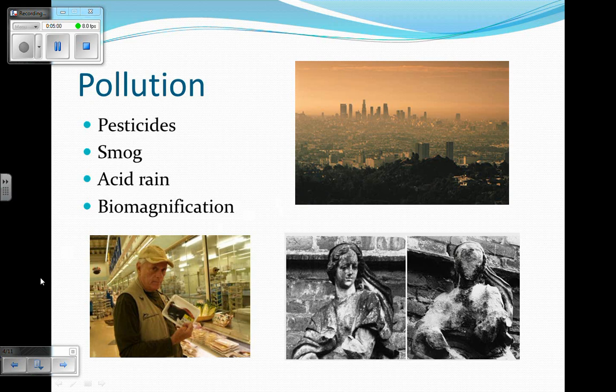The final type of pollution is biomagnification — when a poison builds up as it goes up through the food chain. We see Rick O'Berry here holding a piece of dolphin meat that's been poisoned with mercury. Mercury gets into the ecosystem and is consumed by plankton, with a little bit of mercury in each plankton. Then a fish eats a lot of plankton, so there's more mercury in that fish. And when a dolphin eats a lot of those fish, it gets even more mercury. That's why dolphin meat is dangerous — the poison gets bigger as it goes up through the food chain.